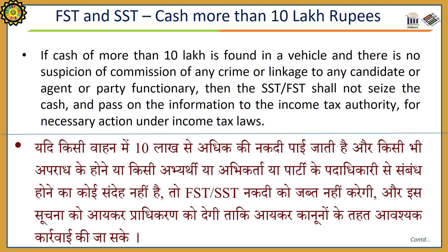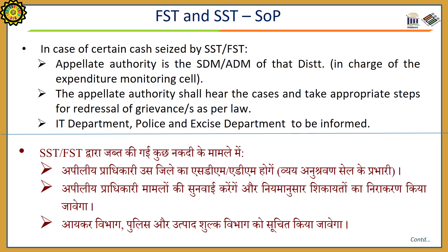If cash of more than Rs. 1,00,00,000 is found in a vehicle and there is no suspicion of commission of any crime or linkage to any candidate, agent, or party functionary, then the SST or FST shall not seize the cash and shall pass on the information to the income tax authority for necessary action under the income tax laws. In case of cash seized by the FST or SST, the appellate authority is the SDM or ADM of the district in charge of the expenditure monitoring cell. The appellate authority shall hear the cases and take appropriate steps for redressal of grievances as per the law. Income tax department, police, and excise department are to be informed.